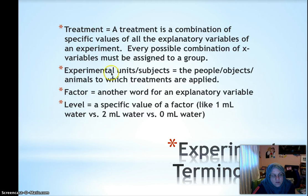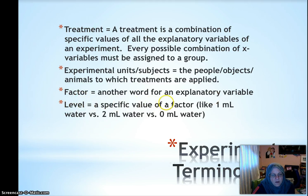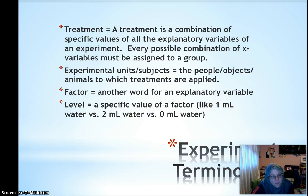Experimental units usually refers to objects or animals, while subjects usually refers to people. Factor is just another word for your X variable — water amount or sunlight amount, for example. Level is a specific value that a factor can take on, like one milliliter of water or two milliliters of water.